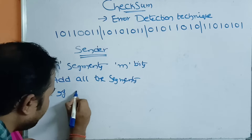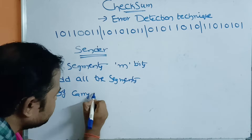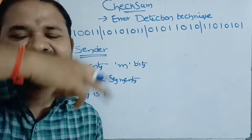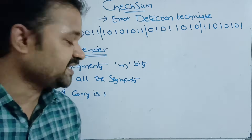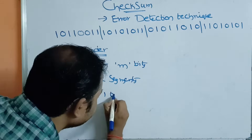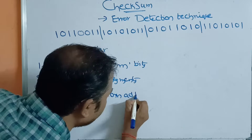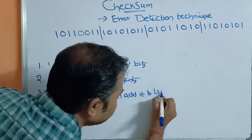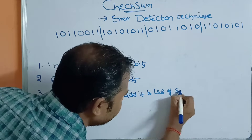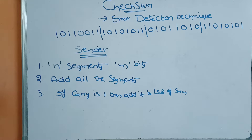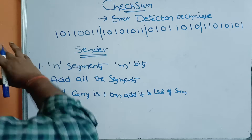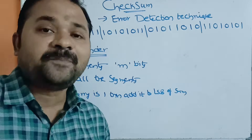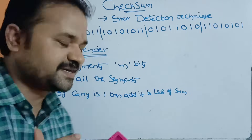The third step: if a carry of 1 is generated after adding the most significant bits, we add that carry to the LSB of the sum. Then, after adding all segments and obtaining the sum, we complement the sum to get the checksum.